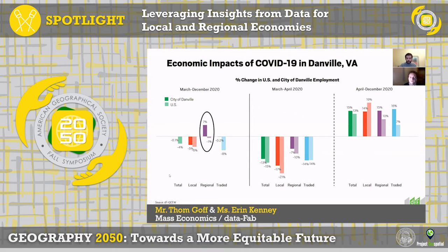To give you an example of how this plays out in local economies, this slide shows data for Daniel, Virginia, using the market areas to understand its economic trajectory compared to the US. These types of analysis are really informative for strategy development. From March to December 2020, regional industries in Daniel actually added jobs, while nationally regional industries lost jobs during this period. Traded industries in Daniel did slightly lose jobs, but nothing on the scale of what happened in the US overall.